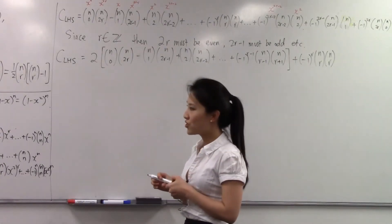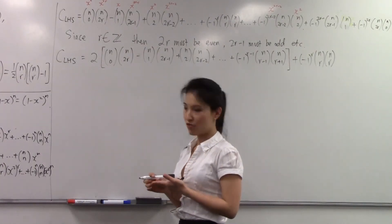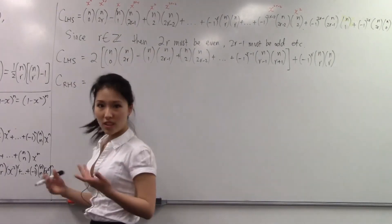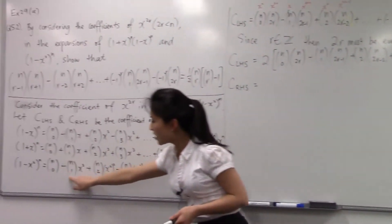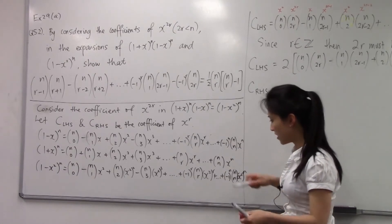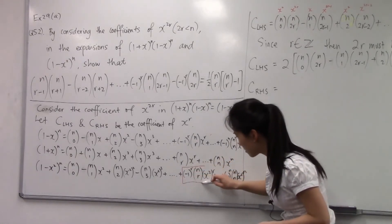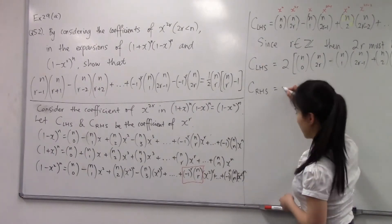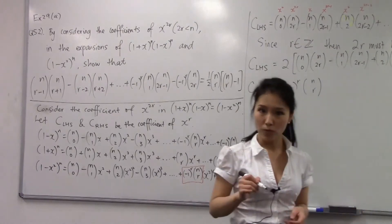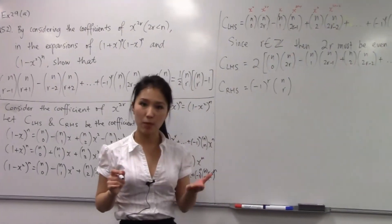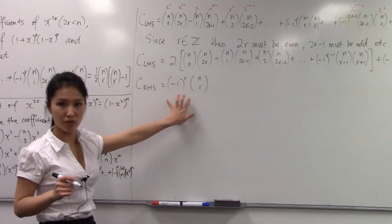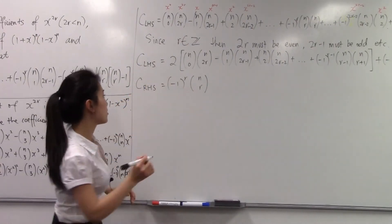Now let's look at the coefficient of x to the power of 2r on the right-hand side. That's quite easy — if you look at this expression, x to the power of 2r on the right-hand side equals to this term. Since we are comparing the same term, x to the power of 2r, the coefficient on the left-hand side equals the coefficient on the right-hand side. So let's write this out.